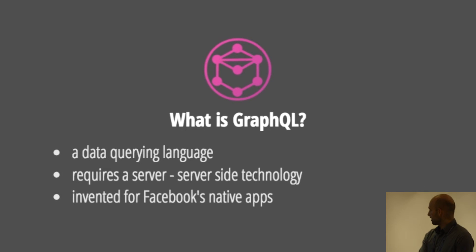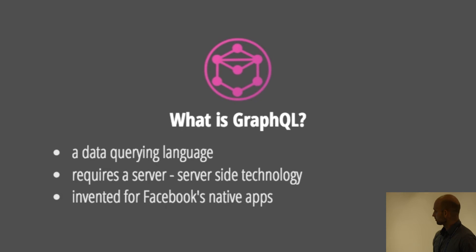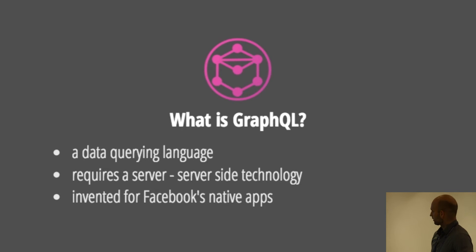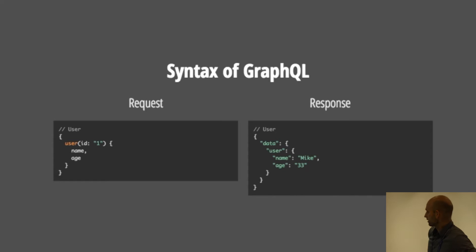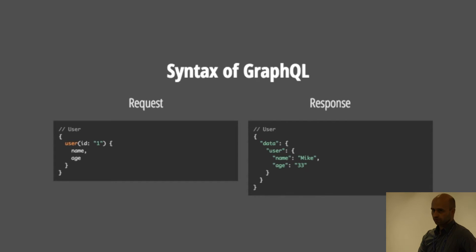Facebook invented it because it had a lot of problems with calls using React on mobile devices and React Native, so it was looking for a solution where it has to make the minimum number of calls and get exactly the data it wants — not more data that then has to be trimmed down on the client. The syntax of GraphQL looks basically like JSON: when you make a request you give a JSON object with an ID and the properties you want, and the response is the same object including the values. So it's very simple and really familiar for every JavaScript developer.